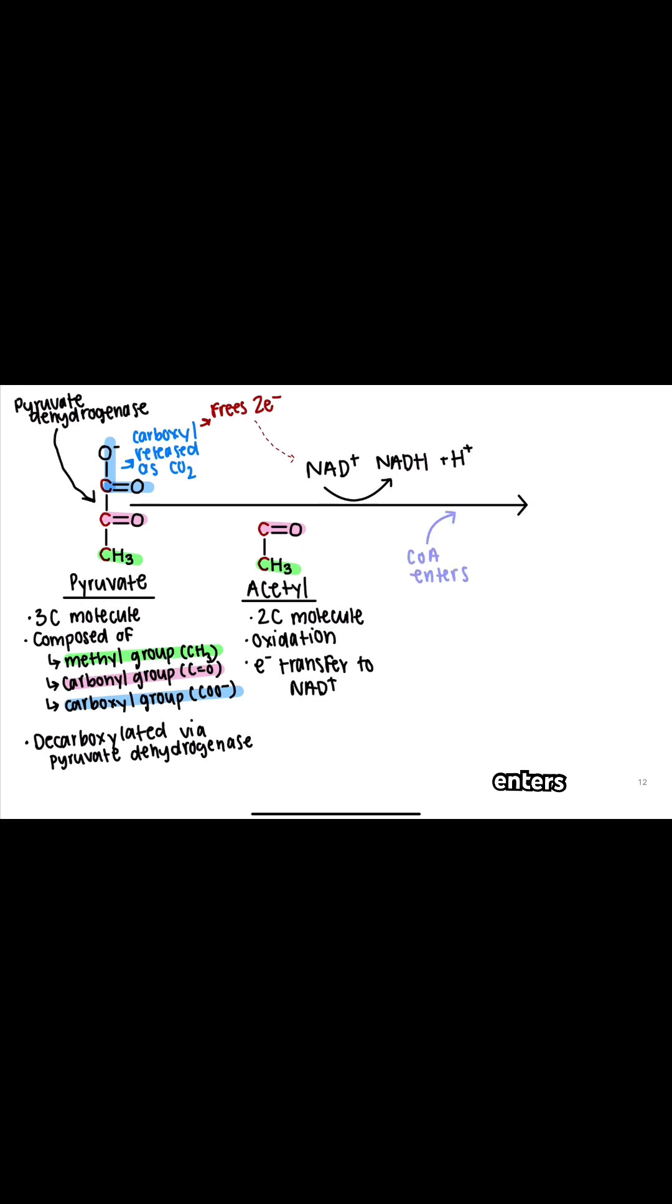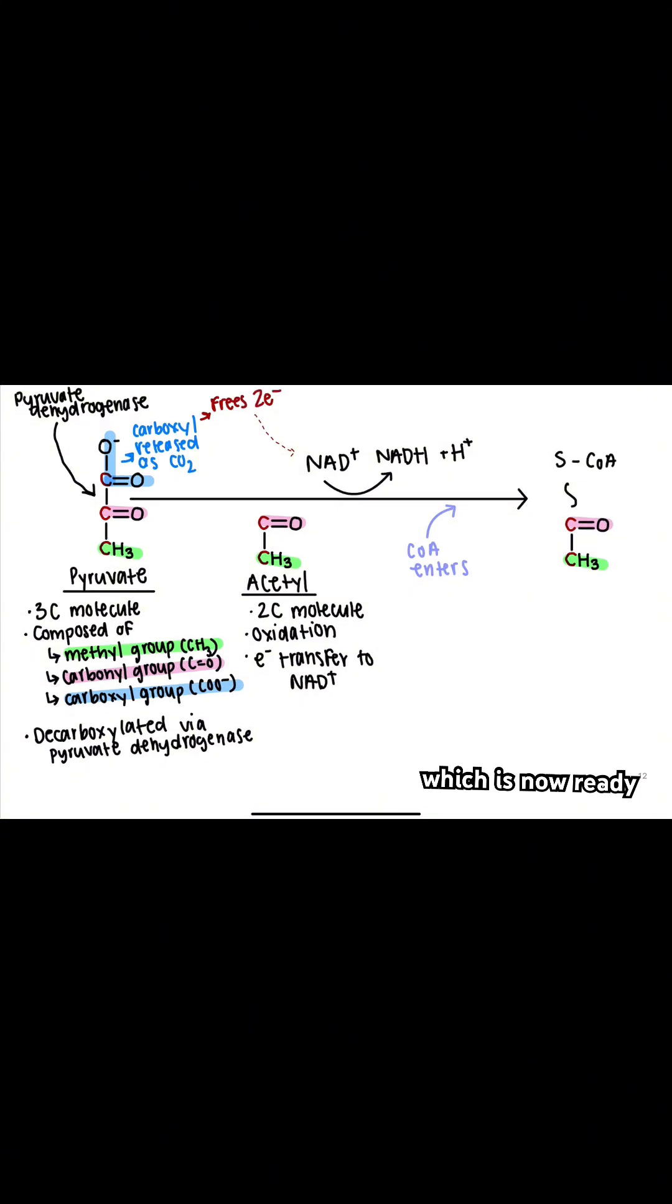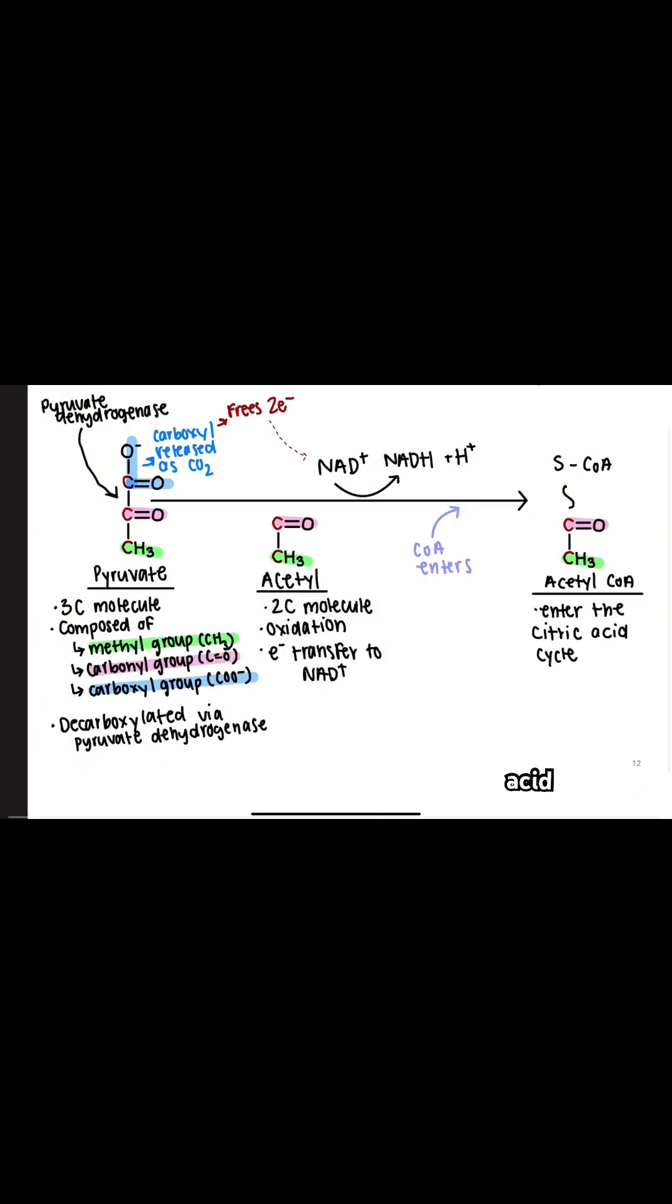After this, coenzyme A enters, and the acetyl group binds to it, forming acetyl-CoA, which is now ready to enter the citric acid cycle.